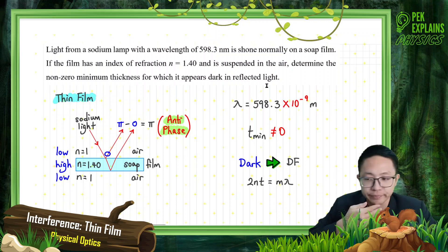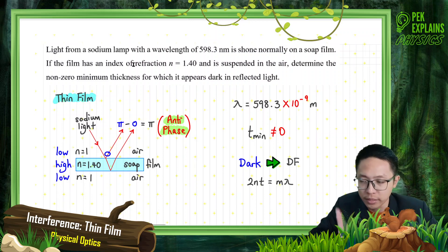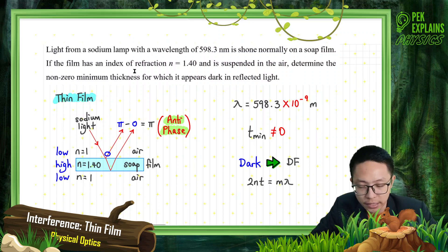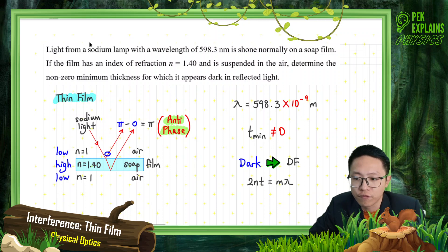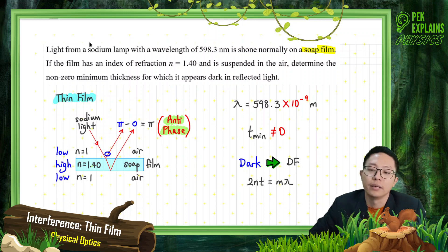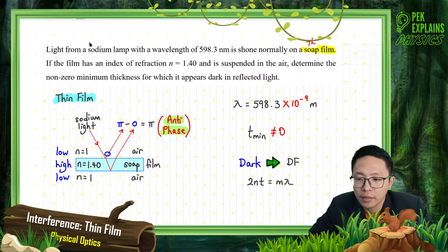First of all, what is this? Is it double slit, thin film, single slit, or diffraction grating? Identify that one first. This one is about thin film because it mentions soap film — the soap itself is the thin film.